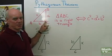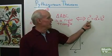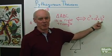Then this is a right triangle. ABC is a right triangle if and only if C squared is equal to A squared plus B squared.